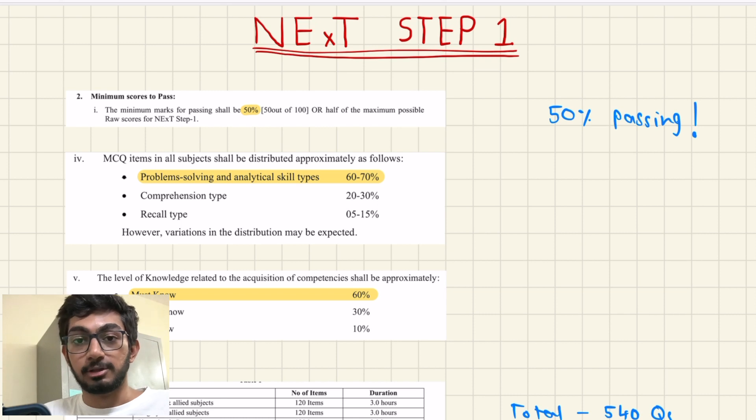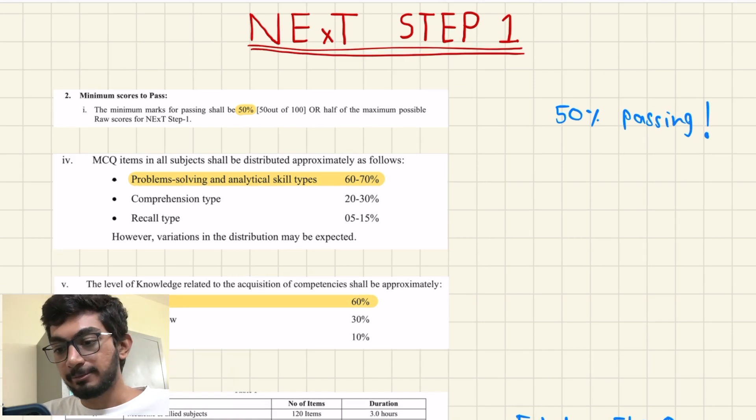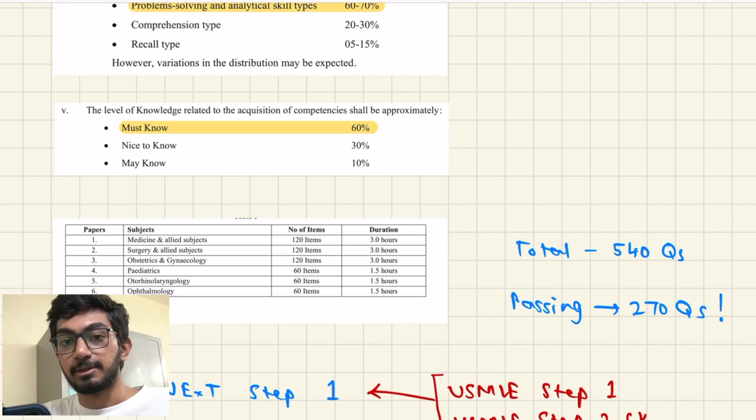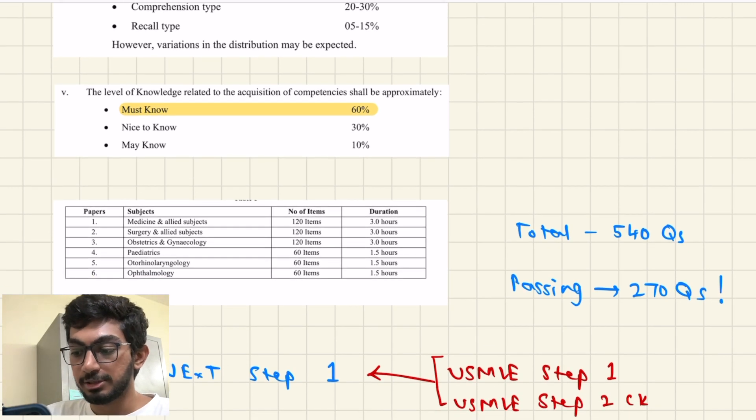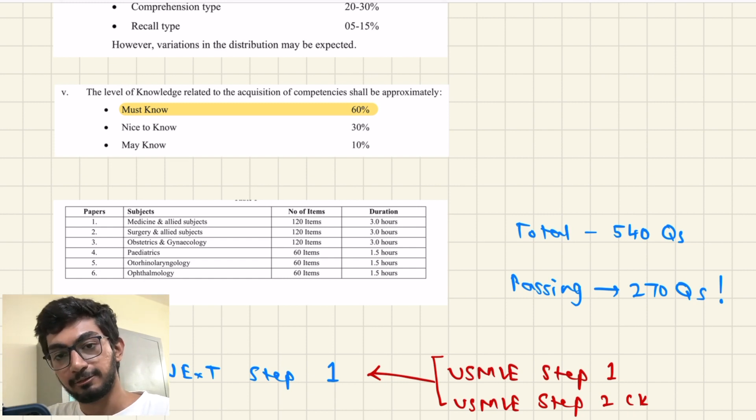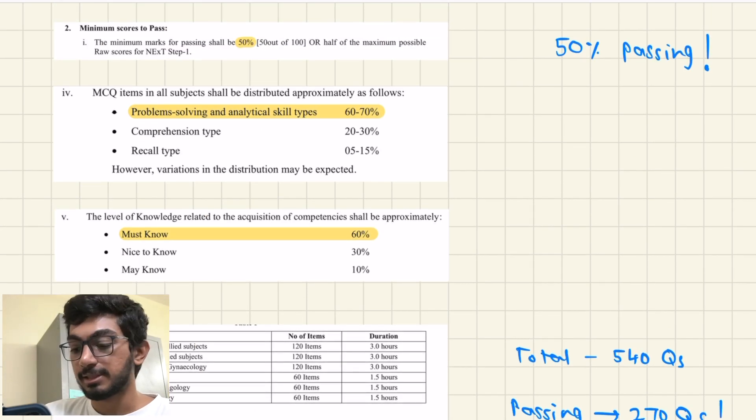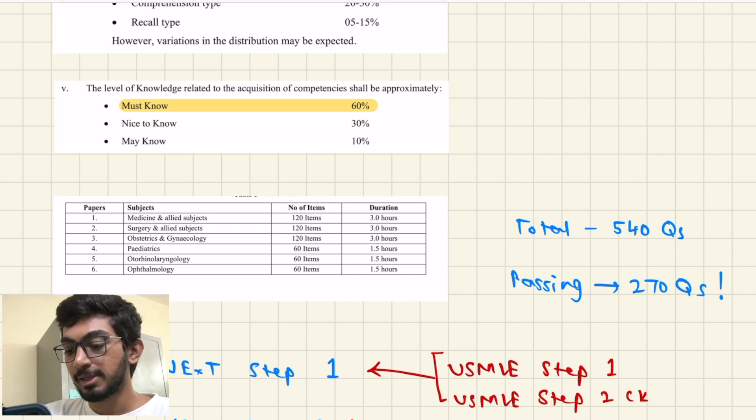Just a recap for those who haven't watched that video: the NMC said that NEXT Step 1 will be 50% passing, it will be 60-70% problem-solving and analytical type skills questions, 60% of them would be must-know topics, and the question distribution will be Medicine, Surgery, OBGY 120 questions each, Pediatrics, ENT and Ophthalmology 60 questions each. Between each day there's going to be one rest day. So 50% passing and total questions are 450, so you just need to get 270 correct questions to pass.